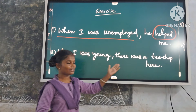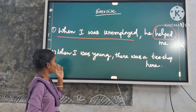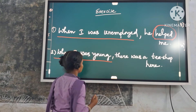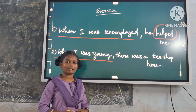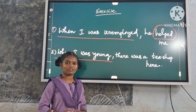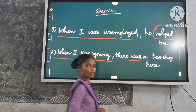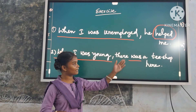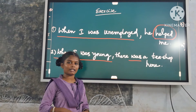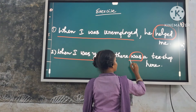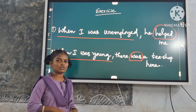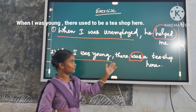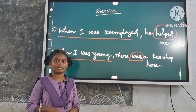Second example: 'When I was young, there was a tea shop here.' Here, 'when I was young' is a time expression. But the verb in the main clause is a stative verb — that is, the 'be' form. So we use only 'used to'. Underline the verb in the main clause and replace it with 'used to be'. Answer: 'When I was young, there used to be a tea shop here.'